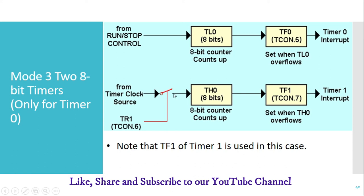To start the TL0 timer we use the TR0 bit, and to start the TH0 timer we use the TR1 bit. Whenever TH0 overflows — value goes from FFh to 00h — the TF1 flag is set to 1, which can be used to generate the timer 1 interrupt. Similarly, when TL0 overflows from FFh to 00h, the TF0 flag is set to 1, generating the timer 0 interrupt.